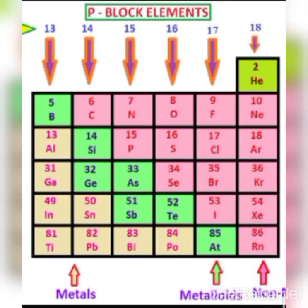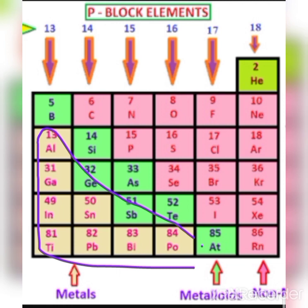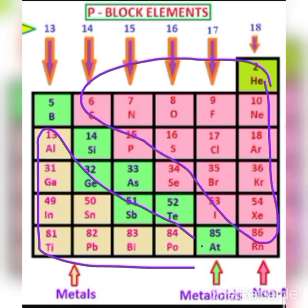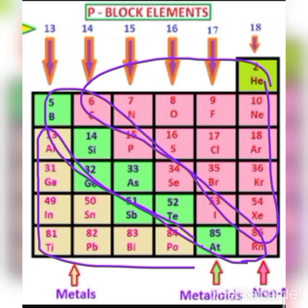In group 13, the elements in the lower part are metals. These metals have electropositive character. The upper part elements have electronegative character, so they are non-metals. The middle part elements have both electropositive and electronegative character, so they are metalloids.